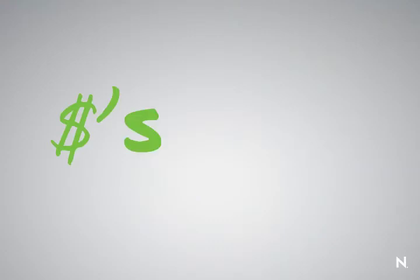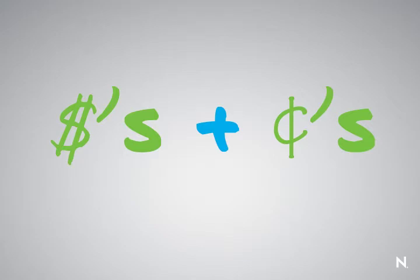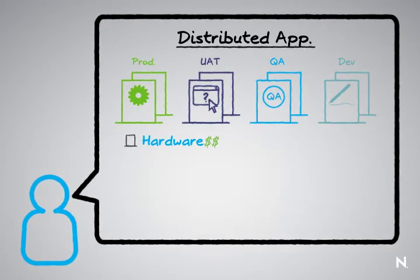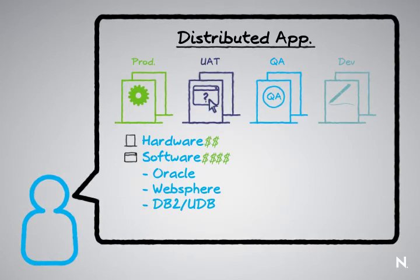So now let's translate this to dollars and cents. What does it mean from a CIO's perspective? A CIO looks at the relative costs and says, "My hardware costs are very inexpensive and I like that." But then they forget about all of the other pieces put together to make this distributed application work. They forget about software costs — especially the big software hitters like Oracle, WebSphere, DB2 UDB, and management software. That is a very high dollar cost to an organization.